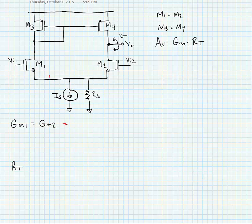Now looking, we know that this is equal to GM1 divided by 1 plus GM1 times any resistance connected to the source of the transistor.